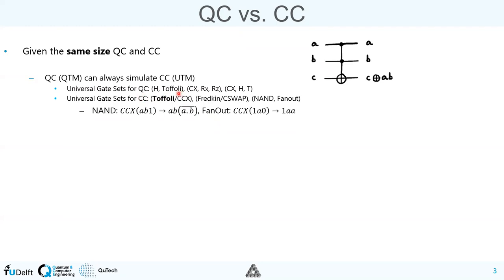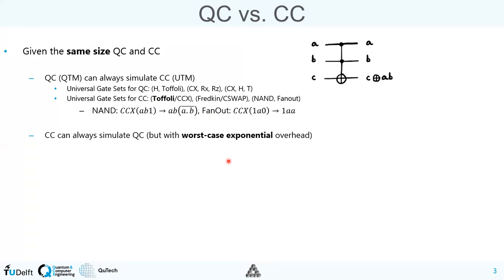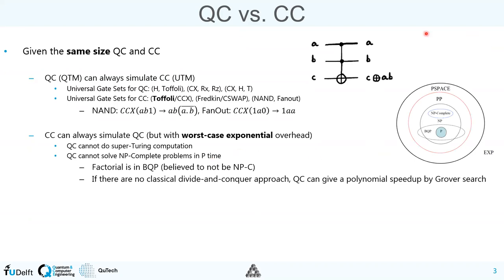With a Toffoli gate we can reproduce both NAND and fan-out, meaning we can do everything a classical computer can do with just one quantum gate, without even using the Hadamard. Conversely, classical computers can also always simulate quantum computation, but with worst-case exponential time. This is important: with classical computation we can effectively simulate all of quantum computation. In theoretical computer science terms, quantum computers cannot perform what's called a super-Turing computation.